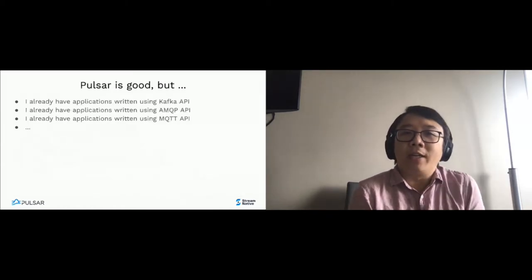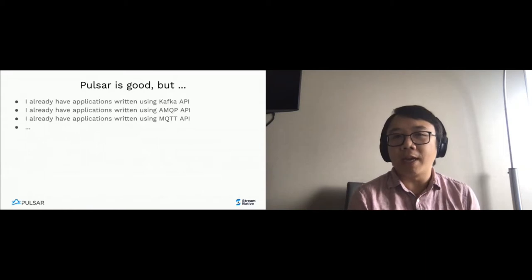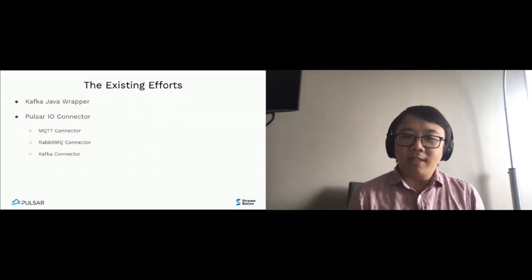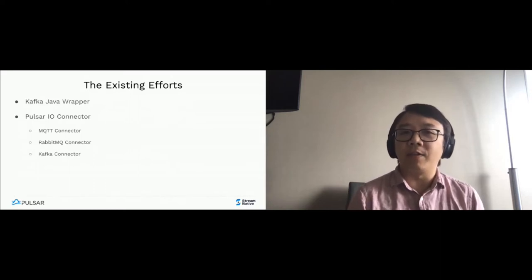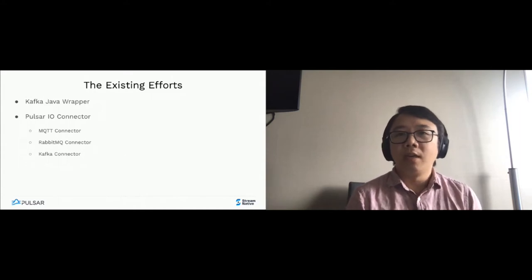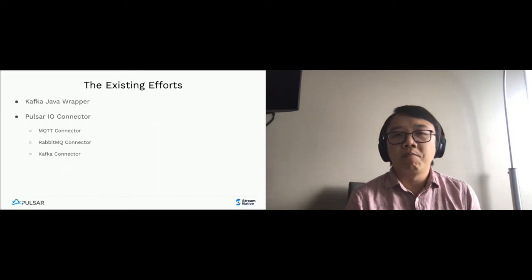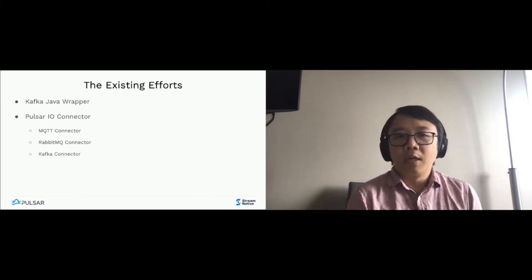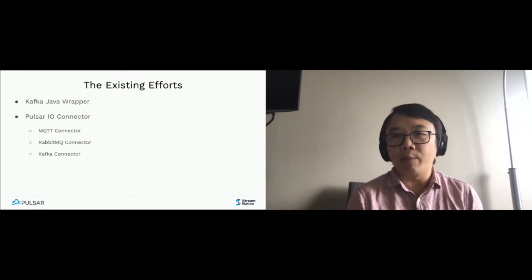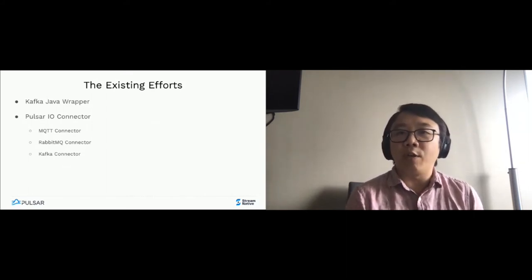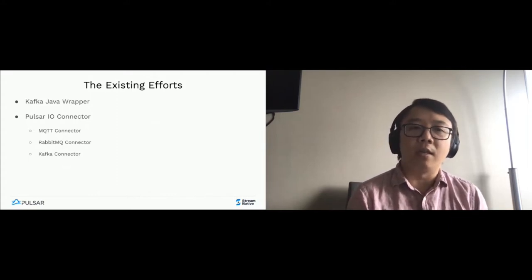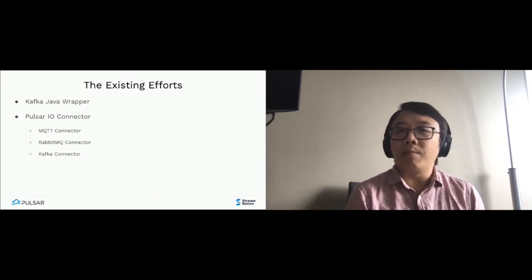Pulsar is good, but many applications are already written using Kafka API, AMQP API, and MQTT API. The Pulsar community spent a lot of effort helping people who are already using other messaging systems — like Kafka, RabbitMQ, and MQTT brokers — to onboard onto Pulsar. For example, we developed a Java wrapper over the Kafka API, so you can simply drop in the wrapper and point your existing Kafka application to a Pulsar cluster.